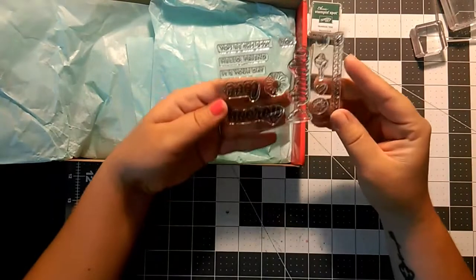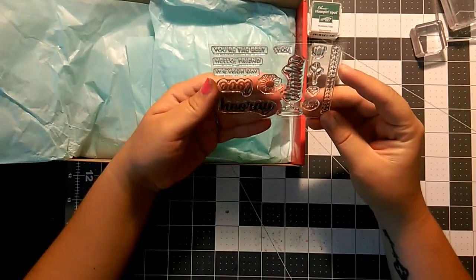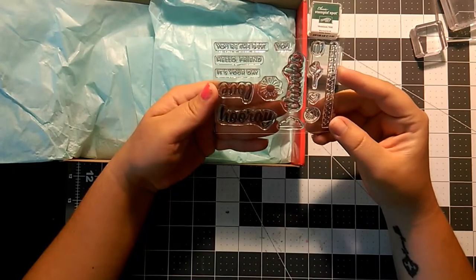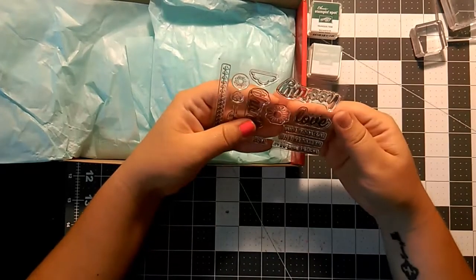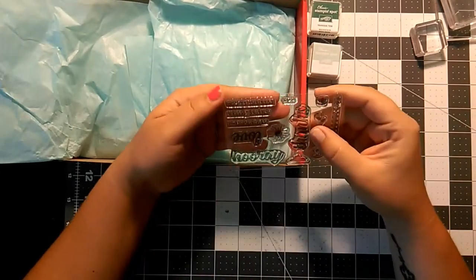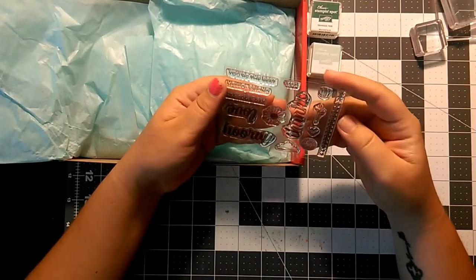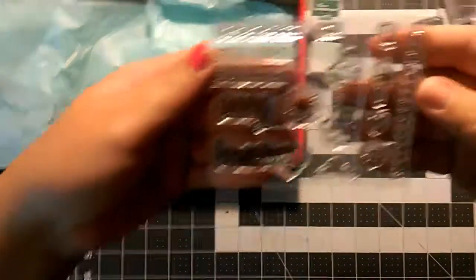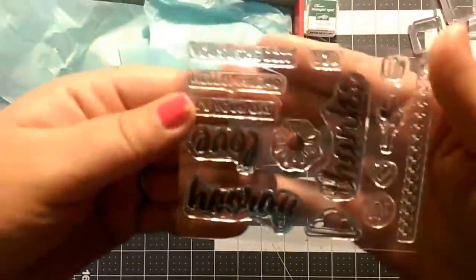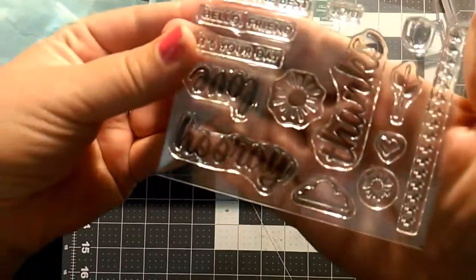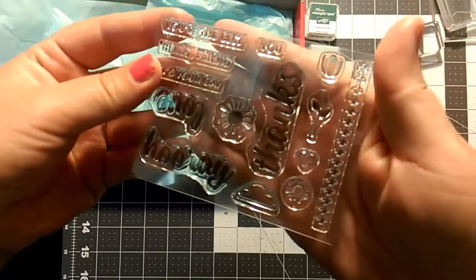For the stamp set, it looks like we have some cute stuff going on here. We have 'hooray,' this one says 'love,' this one says 'you're the best,' 'hello friend,' 'it's your day,' 'thanks,' 'you can see I'm here,' cute little designs, just flowers and hearts and a little sunshine cloud.